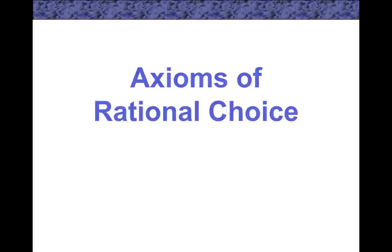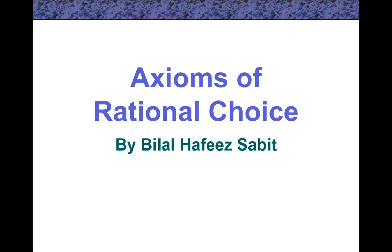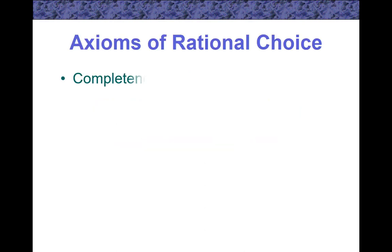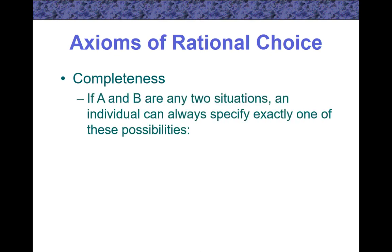Axioms of Rational Choice by Bilal Hafiz Sabbat. Completeness: If A and B are any two situations, an individual can always specify exactly one of these possibilities: A is preferred to B, B is preferred to A, or A and B are equally attractive.